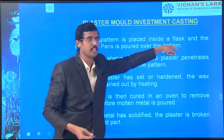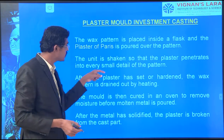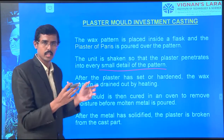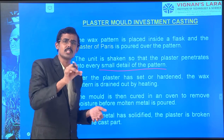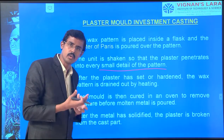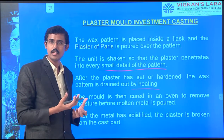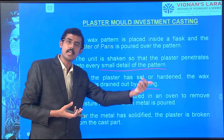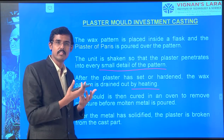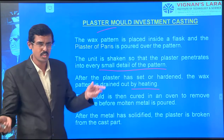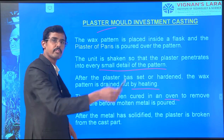The unit is shaken so that the plaster penetrates into every small detail. We shake it because the pattern won't break, and accordingly we give vibrations so the poured plaster goes into all corners. After the plaster has set and hardened, the wax pattern is drained out by heating. Now the cavity is ready with respect to the plaster of Paris. The mold is then dried, moisture is removed, and we pour - solidification takes place.